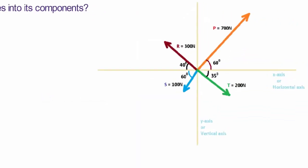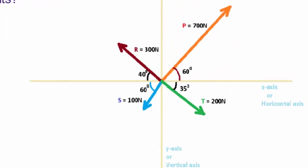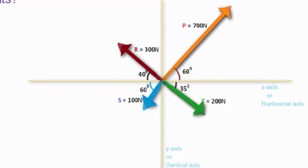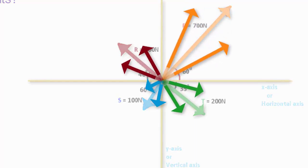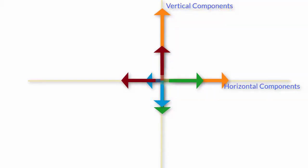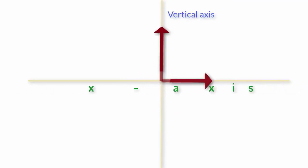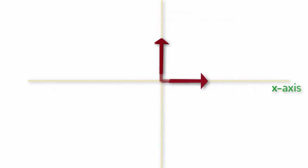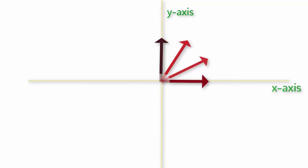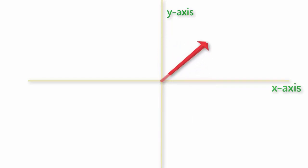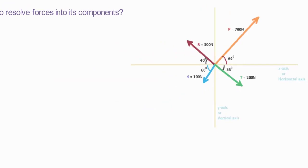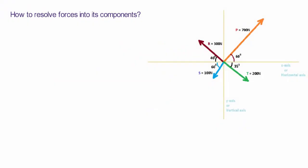Consider the figure as shown. In this figure there are different forces acting along different directions, which we have to resolve into their components and find the net force acting along the horizontal and vertical axis — that is along the x-axis and y-axis. Then we will find the resultant of the net vertical and horizontal forces and its direction.